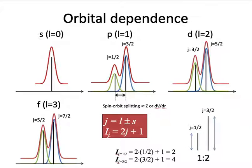XPS peaks appear as doublets in some cases — except for the S electron orbital. This occurs because the electron spin couples with the orbital angular momentum, which we call spin-orbit coupling. The doublet peaks have a constant amplitude ratio depending on the orbital quantum number, and the peak energy splitting is also constant, based on the spin-orbit splitting energy.